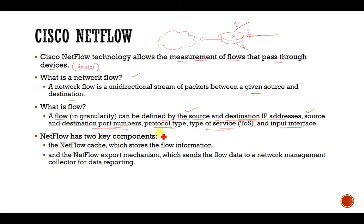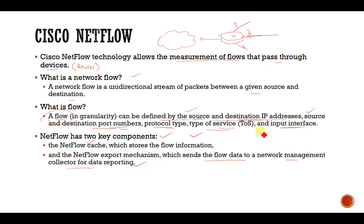NetFlow has two key components. First, the NetFlow cache, which stores the flow information. Second, the NetFlow export mechanism, which sends the flow data to a network management collector for data reporting. A network management system manages the network flow, and the data can be transferred to that network flow manager.